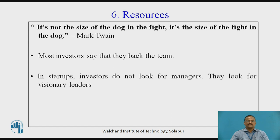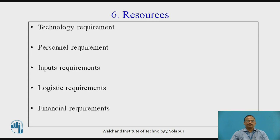The sixth component is resources. It is not the size of the dog in the fight — it is the size of the fight in the dog. Most investors say that they back the team. In startups, investors do not look for managers; they look for visionary leaders — a person who believes wholly in the product or service and will inspire and motivate others in the team. For a product or service, resources include technology, personnel, inputs such as raw material, services and utilities, logistic requirements, distribution, sales, delivery and after-sales services, and financial requirements.